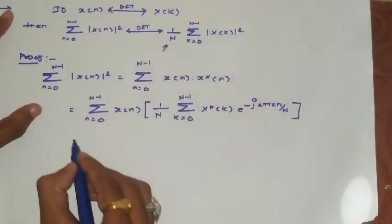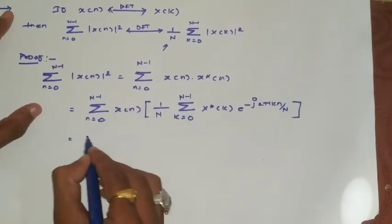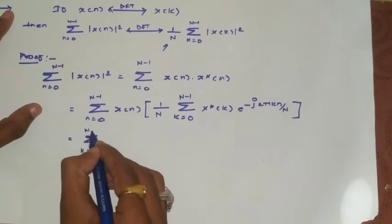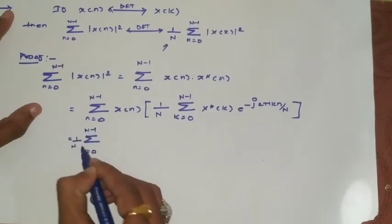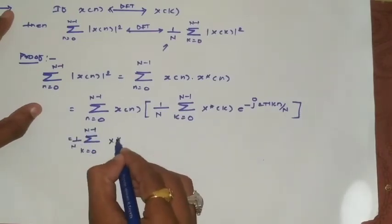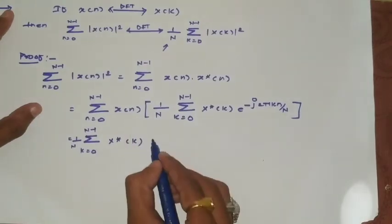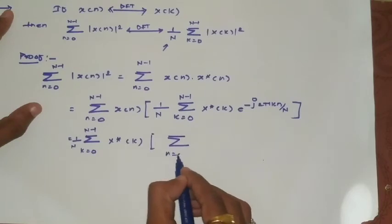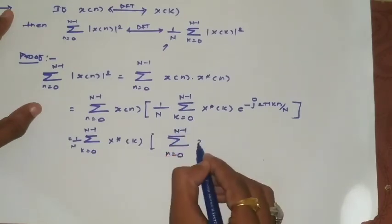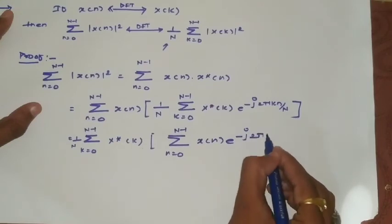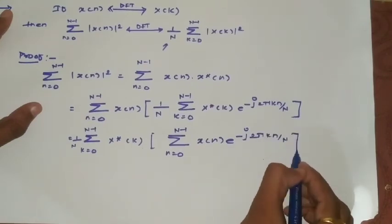I'll take the k summation term first. This becomes the summation from k=0 to N-1 of (1/N)·X*(k), and the remaining term is the summation from n=0 to N-1 of x(n)·e^(-j2πkn/N).